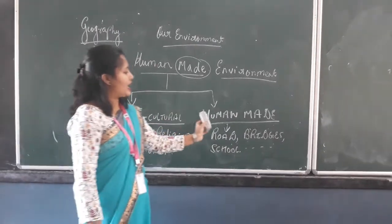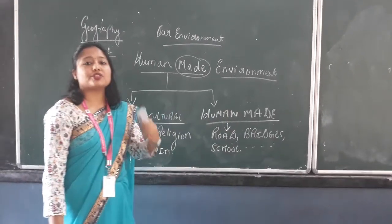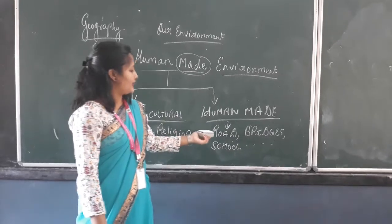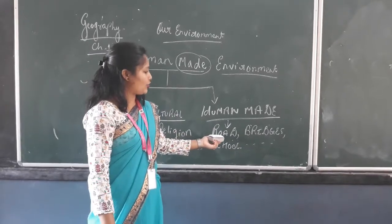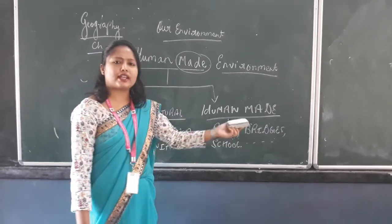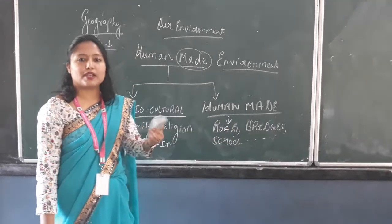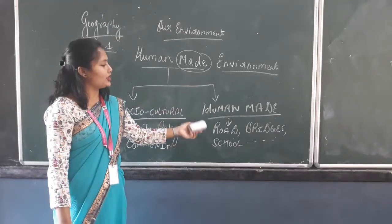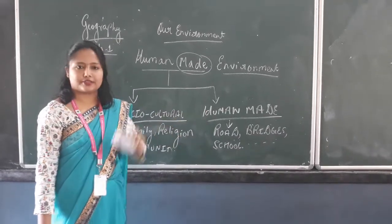Next you have human made — the things which are made by human. First you can say road, bridge, school — different kinds of things that are made by humans. That comes in your human made environment.